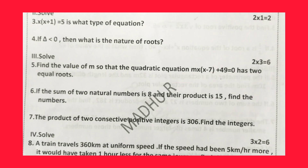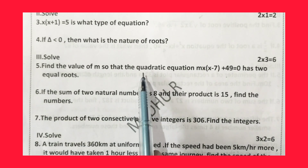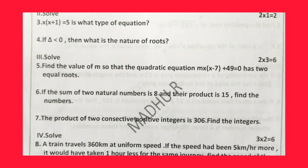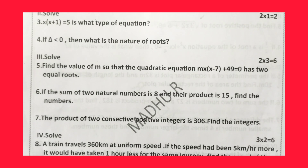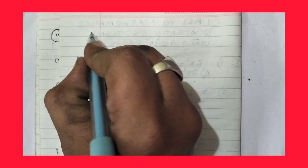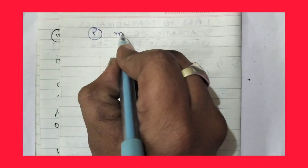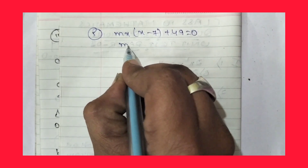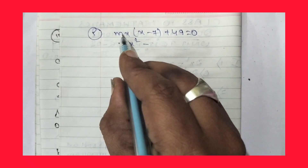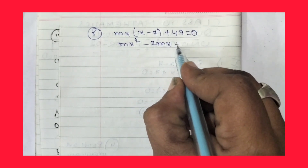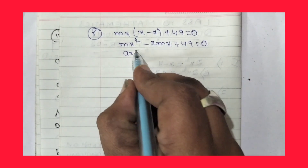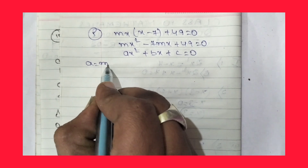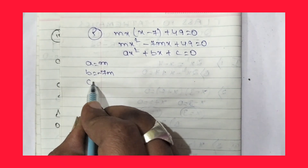Now let us move for question number 5. Find the value of m so that the quadratic equation mx(x - 7) + 49 = 0 has two equal roots. Expanding: mx² - 7mx + 49 = 0. Comparing to ax² + bx + c = 0, we get a = m, b = -7m, and c = 49.